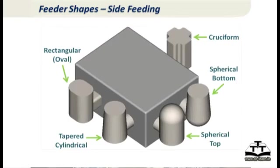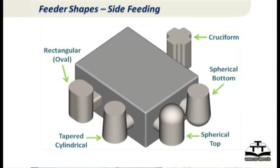For side feeders you have the same oval and cylindrical shapes, but you can also have a spherical top — these are all blind feeders. You can have a spherical bottom feeder too. Spherical top and spherical bottom shapes come closer to a sphere but are tall, which takes care of the piping problem.